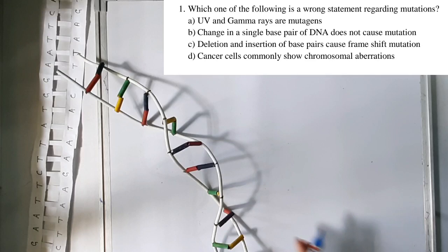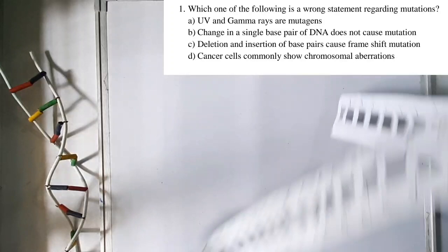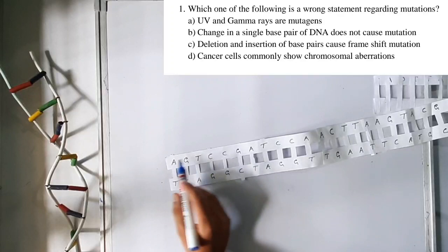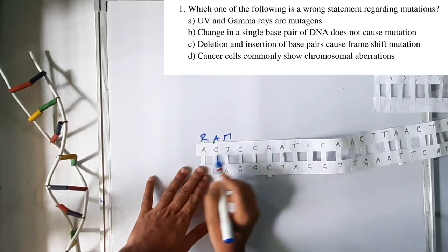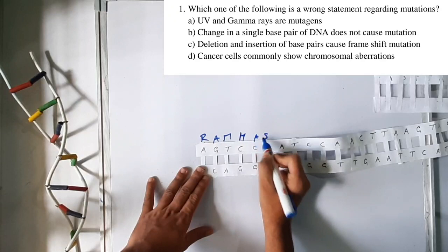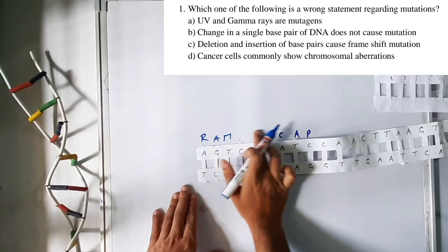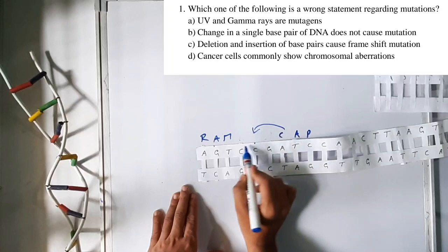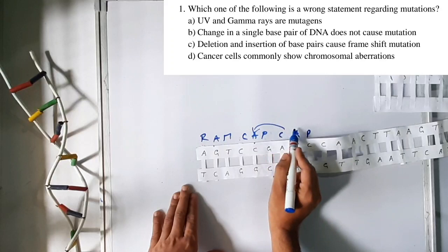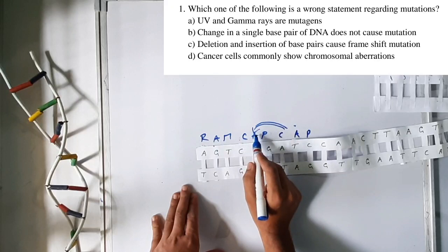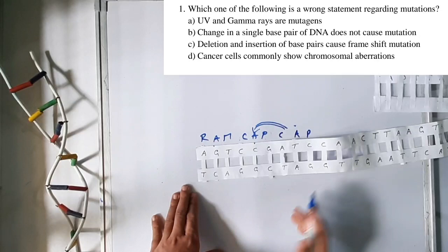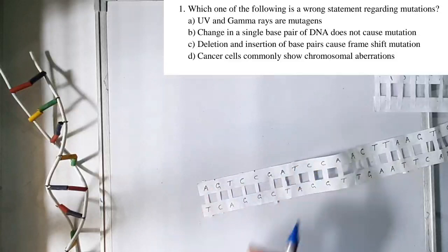Let us also verify option C: deletion and insertion of base pairs cause frame shift mutation. Using a DNA paper model with sequences like AGT, RAM, HAS, CAP — if HAS is deleted, CAP shifts to that position. This shifting of nitrogenous bases from one place to another due to deletion is called frame shift mutation. Option D: cancer cells commonly show chromosomal aberration — this is also correct. So option B remains the wrong statement and correct answer for question 1.